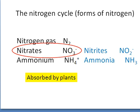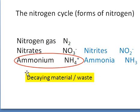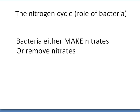Nitrates are the form in which nitrogen is absorbed by plants, and ammonium is mainly associated with decaying material and waste products. Once you understand the forms of nitrogen, the next stage is to understand what the bacteria do — the role of the bacteria in the cycle.